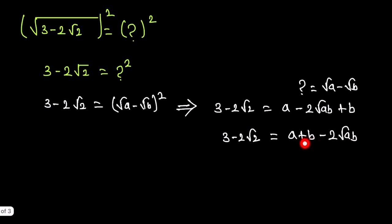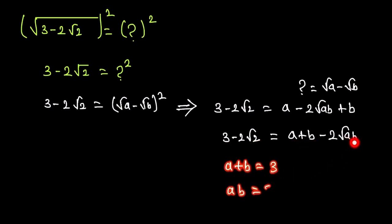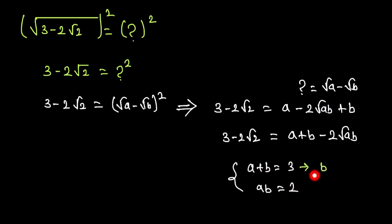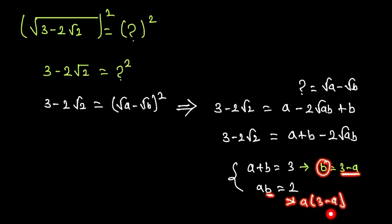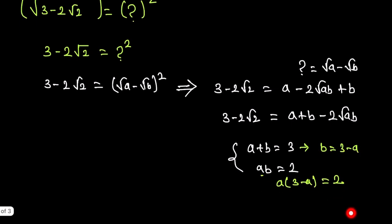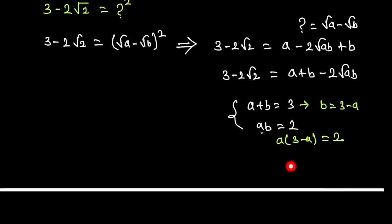From equating coefficients: a + b = 3 and ab = 2. So b = 3 - a. Substituting into ab = 2 gives a(3 - a) = 2, so 3a - a² = 2.